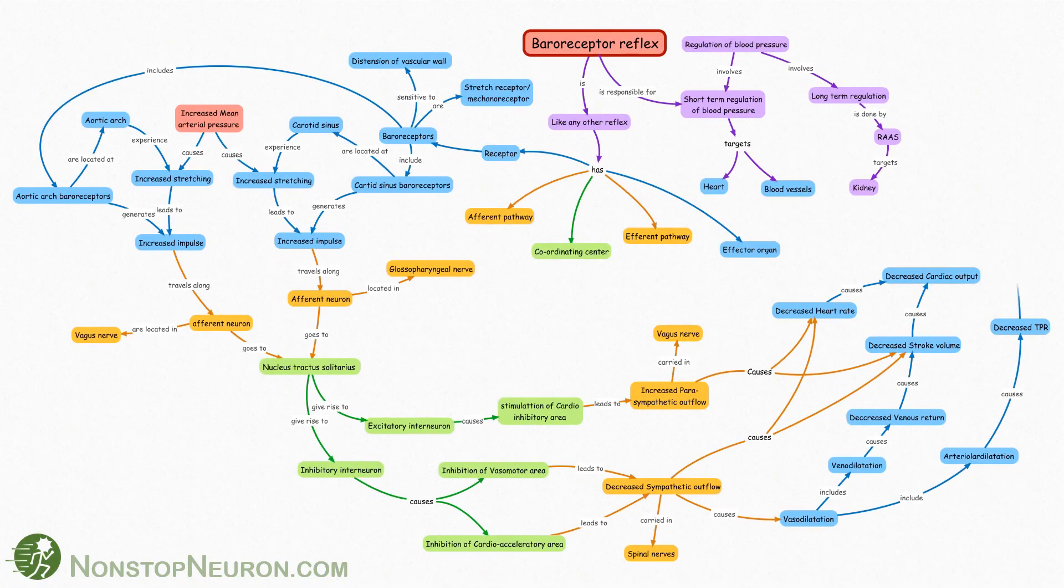Decreased cardiac output along with decreased total peripheral resistance bring about decrease in mean arterial pressure which finally balances the initial rise in blood pressure.